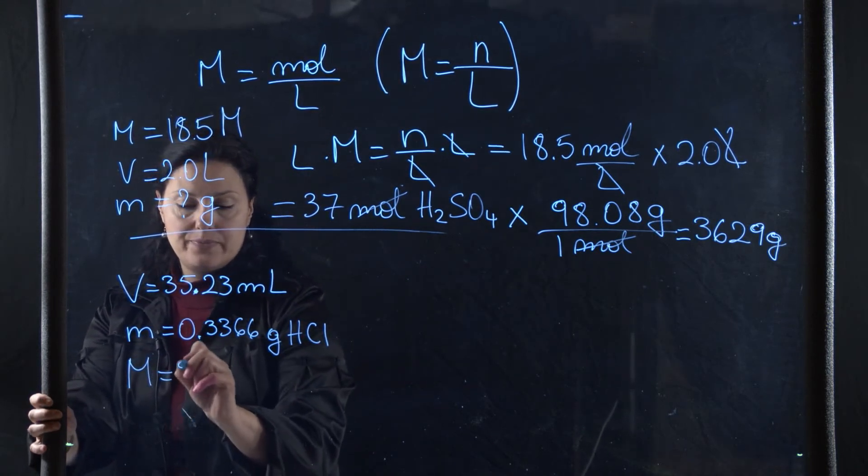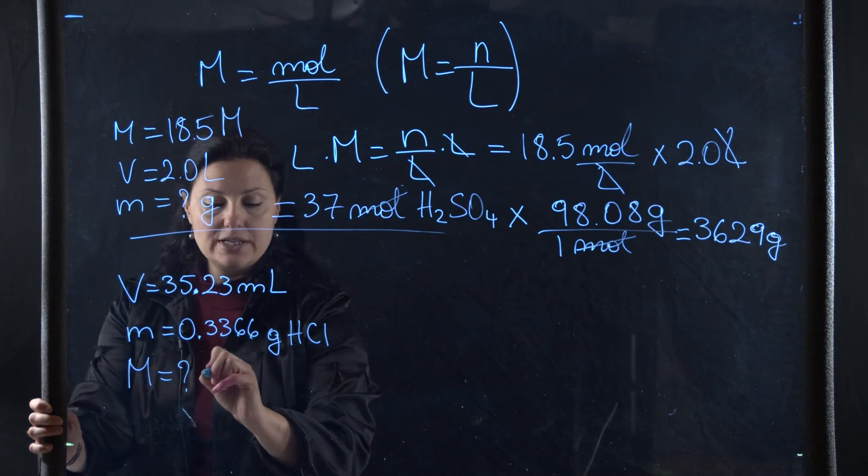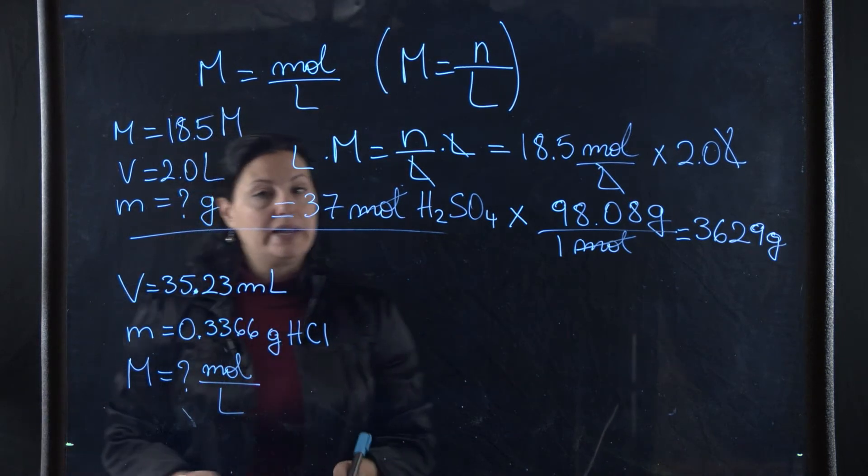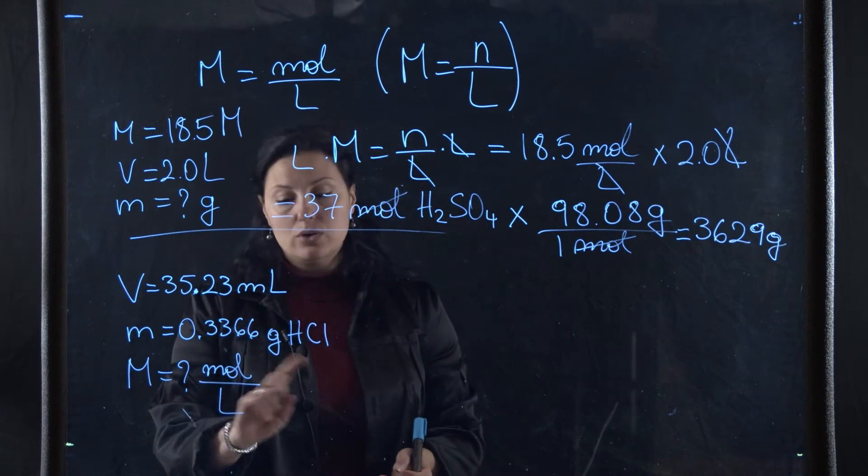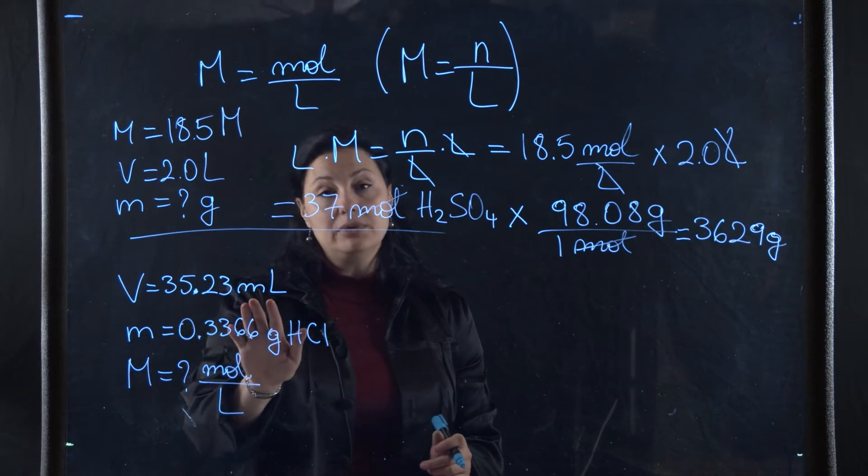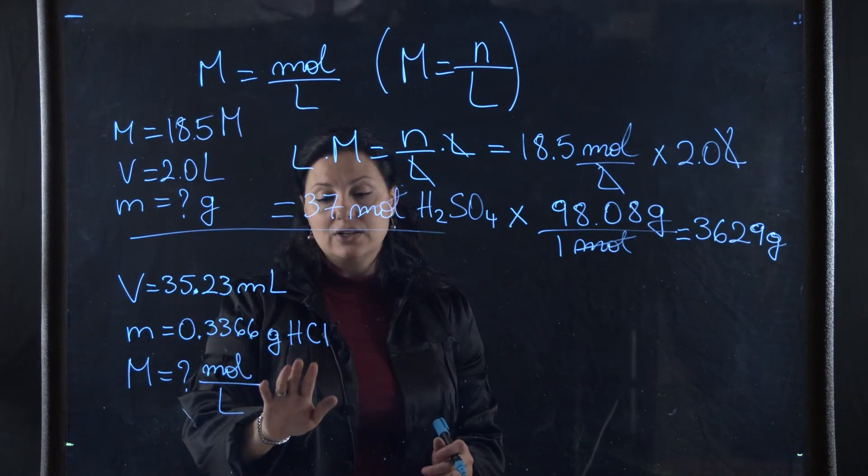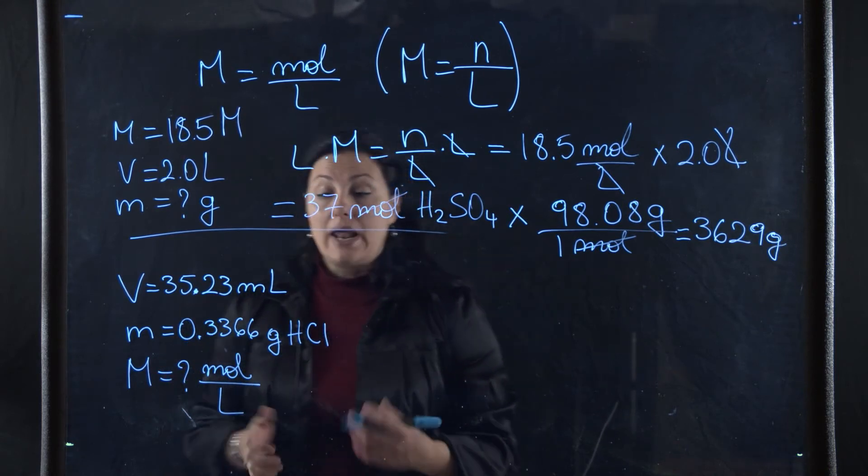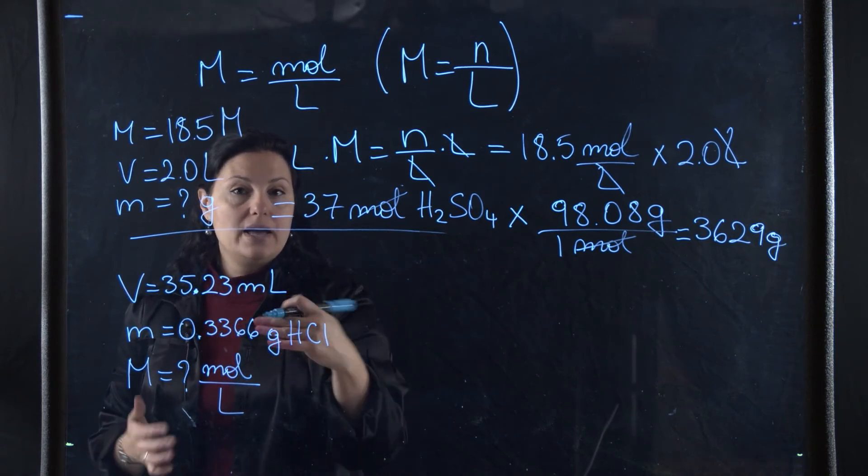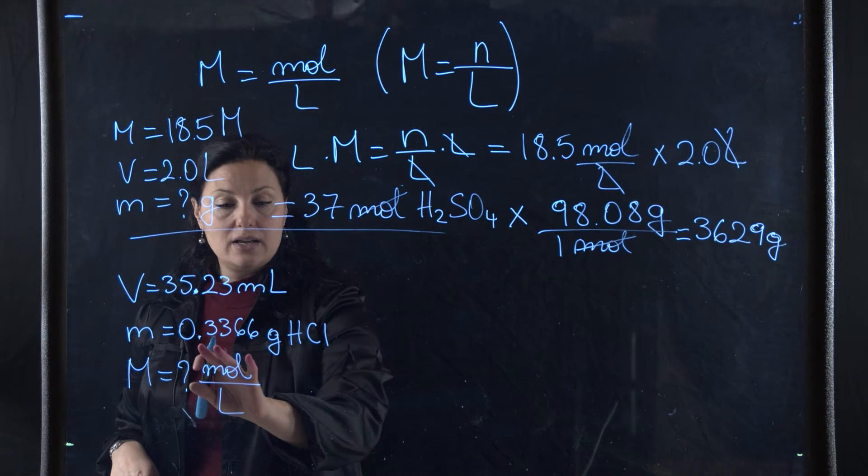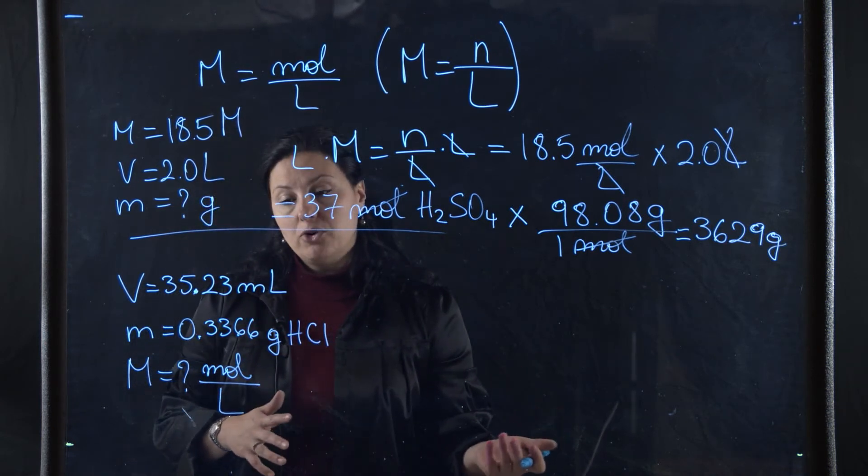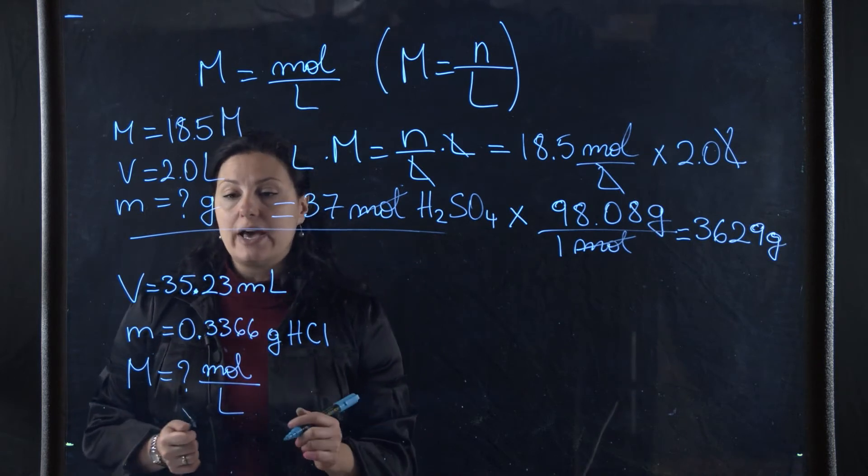Remember, molarity is expressed in moles over liters. What do I need? I need an amount in moles and I need a volume in liters. I have neither at this point. I have a volume in milliliters and I have a mass in grams. But I can figure out the liters by converting the volume, and I can convert the mass to number of moles knowing the molar mass of HCl.